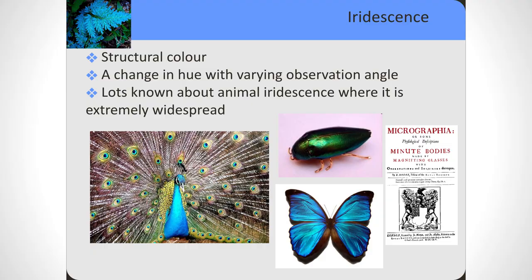Iridescence is structural color. If you look at the chairs you're sitting on or the clothes you're wearing, most of them are a color usually due to pigments. A pigment is where a chemical compound within that material absorbs all of the wavelengths apart from the wavelengths it reflects, and those reflected wavelengths are what your eye perceives as a particular shade of color. Iridescence is a special form of structural color.